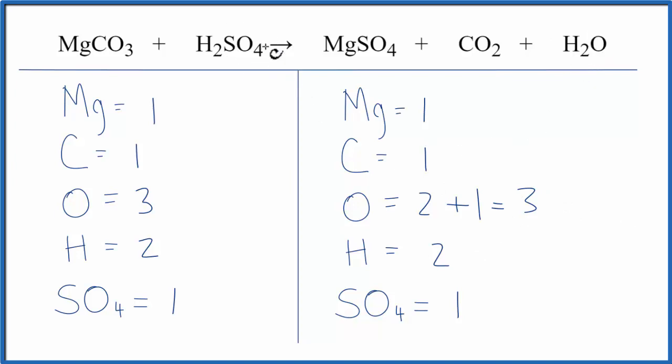Again, by counting this SO4, this polyatomic ion, the sulfate ion, as one thing because it appears on both sides, that's a real good strategy for equations like this.